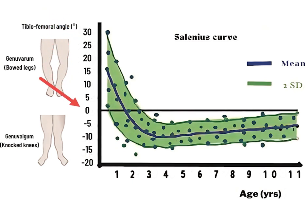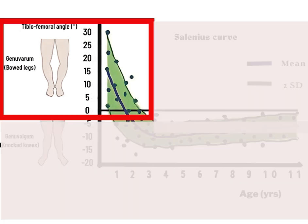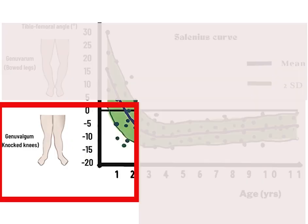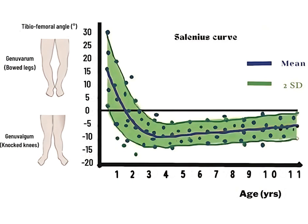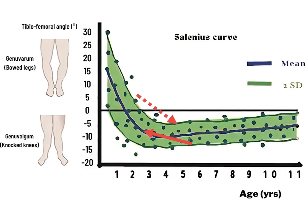Zero on the vertical axis is when the leg is straight. The upper part of the curve represents genu varum — bow legs — and the lower part represents genu valgum — knock knees. Most children are born with a genu varum of around 15 degrees, though the range is quite wide, from as low as 3 degrees to as high as 30 degrees. The green area represents the range of normality, while the darker blue line represents the average angle between the femur and the tibia.